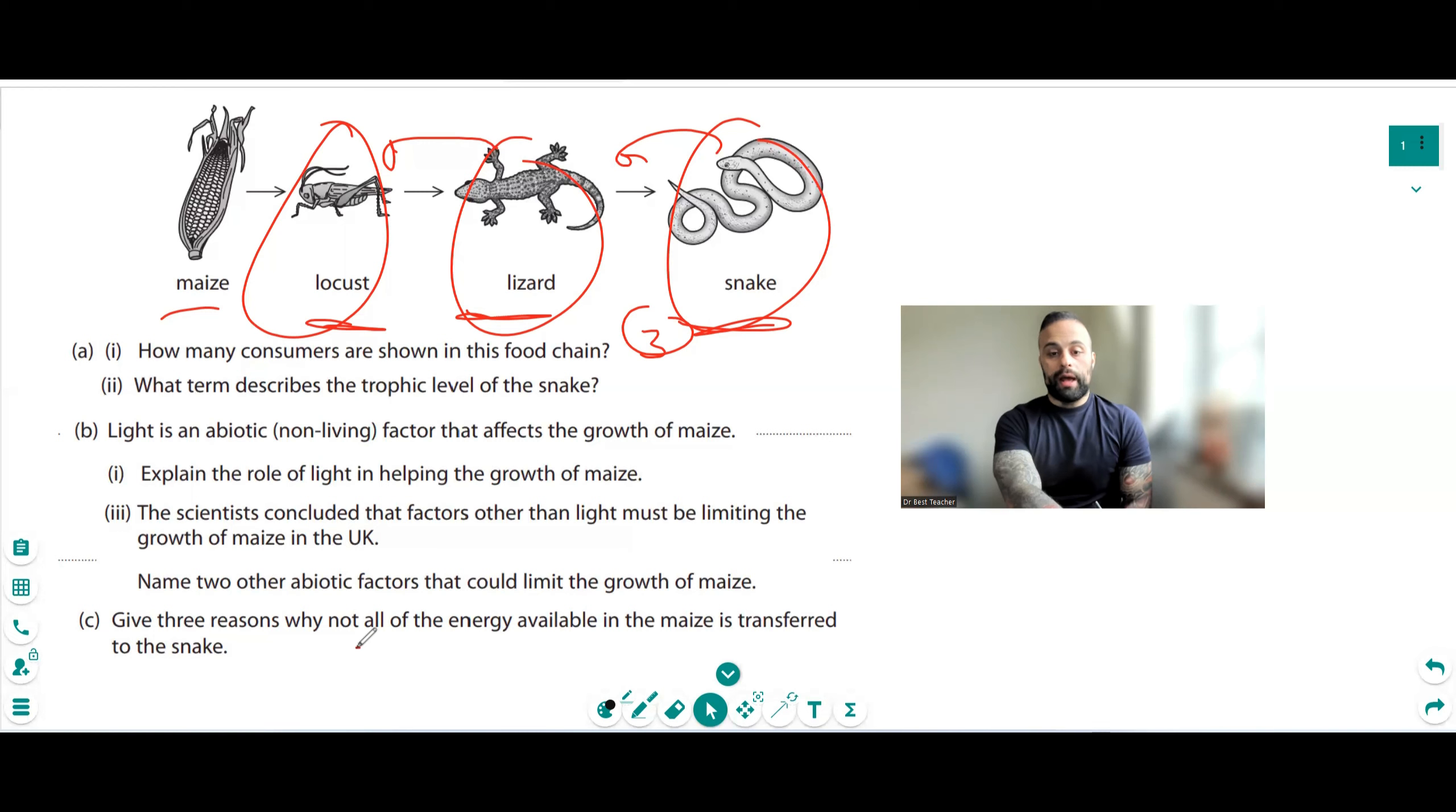Give three reasons why not all the energy available in maize is transferred to the snake. Now that's because of respiration. So as they're going up the food chain, the animals are moving about. They're trying to keep warm and that all uses energy in the form of respiration. Now, not all of the plant is able to be digested. Like for example, the cell wall is made out of cellulose, which is great for fiber, but you can't get any energy because you can't break it down. There are certain animals that can break it down and utilize that energy, but we cannot.